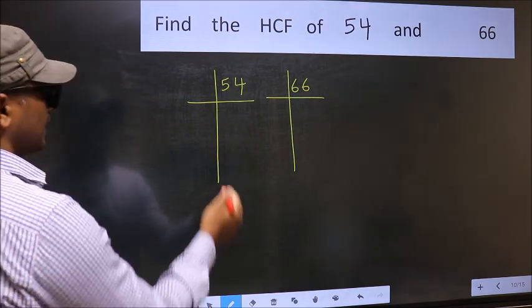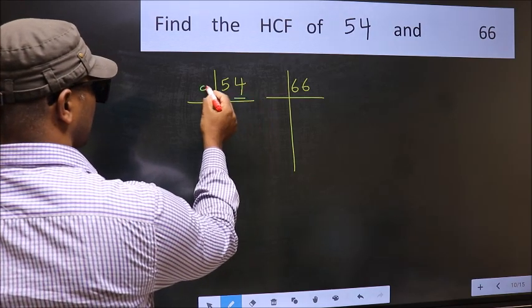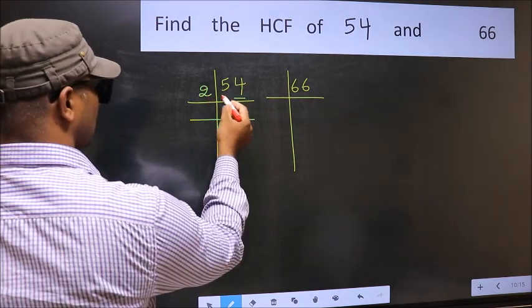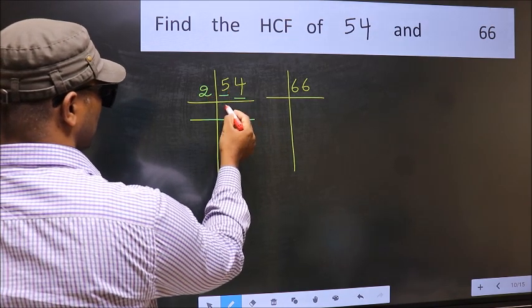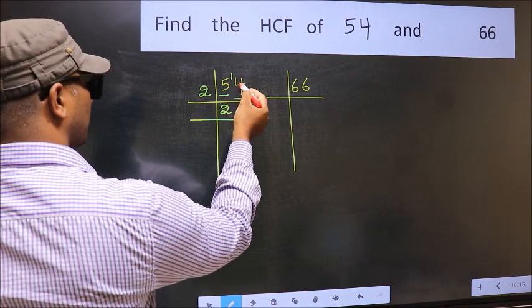Next, in this number, last digit 4, so take 2. First number 5, a number close to 5 in the 2 table is 2 times 2 is 4, 5 minus 4 is 1, carried forward 14. When do we get 14 in the 2 table? 2 times 7 is 14.